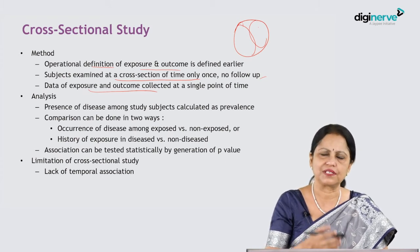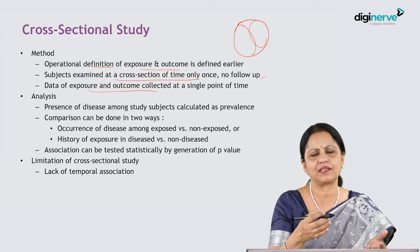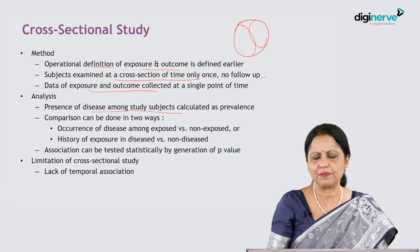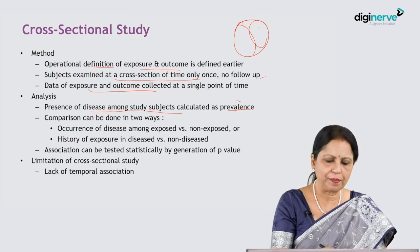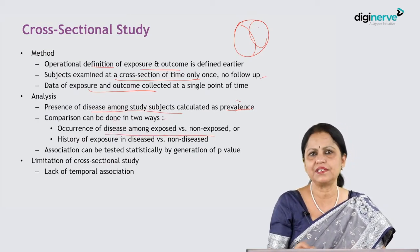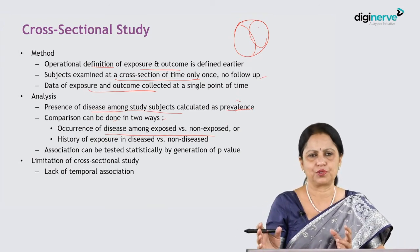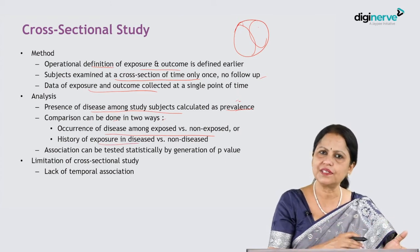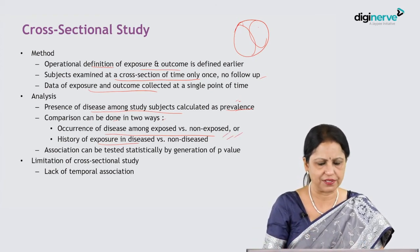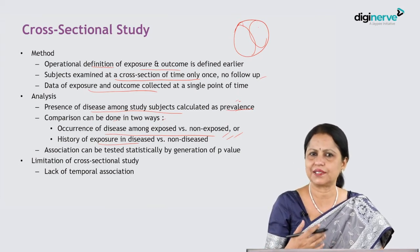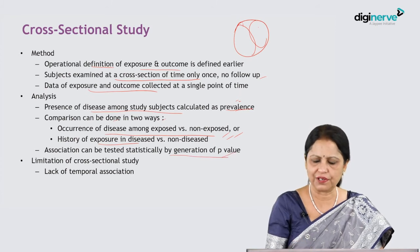Since data on exposure and outcome are collected at the same point in time, we cannot determine which preceded the other — whether the suspected factor came before the disease or vice versa. For analysis, we measure prevalence: the number of people with the disease divided by the total population at risk. Comparison can be done in two ways: occurrence of disease among the exposed versus non-exposed, or history of exposure among diseased versus non-diseased. Statistical association is then tested using tests of significance and p-values, to be discussed further in biostatistics sessions.